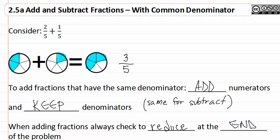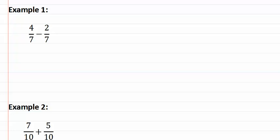Let's look at example one. Example one is four-sevenths minus two-sevenths. We subtract the numerators: four minus two is two, and then we keep the denominators, which makes it two-sevenths. There is nothing to reduce, so that is our final answer.